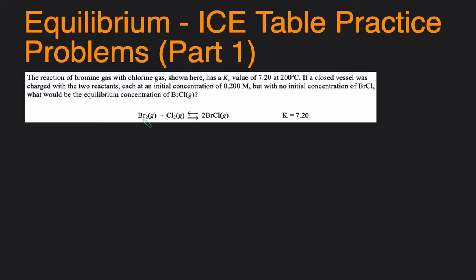In this question, you're given the balanced chemical reaction. You're also given the Kc value of 7.2. You're given the temperature, although that's not too relevant. And then you're given the initial concentration of both the reactants are 0.2 and that there are no products. And then you're asked to determine the equilibrium concentration of the product.